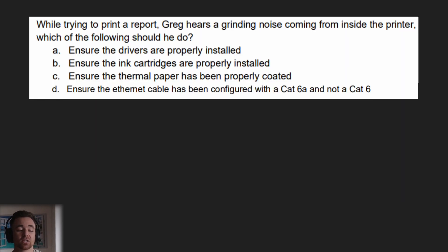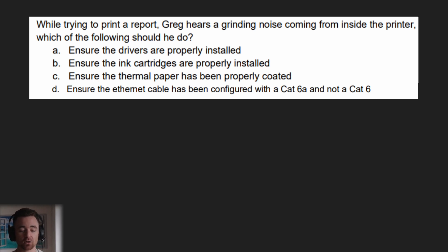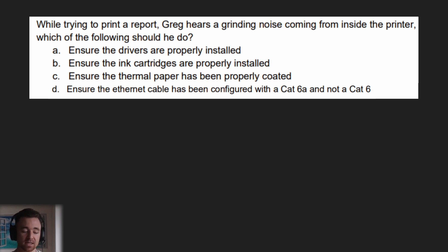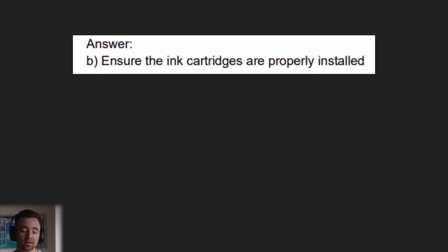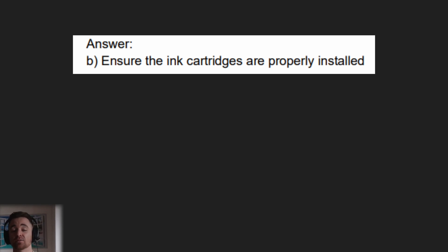Next question: While trying to print a report, Greg hears a grinding noise coming from inside the printer. Which of the following should he do? A) ensure the drivers are properly installed, B) ensure the ink cartridges are properly installed, C) ensure the thermal paper has been properly coated, or D) ensure the Ethernet cable has been configured with Cat6A and not simply Cat6. The answer is B — ensure the ink cartridges are properly installed. Make sure everything is installed properly with no loose components. That's a good first step if you're hearing grinding noises.